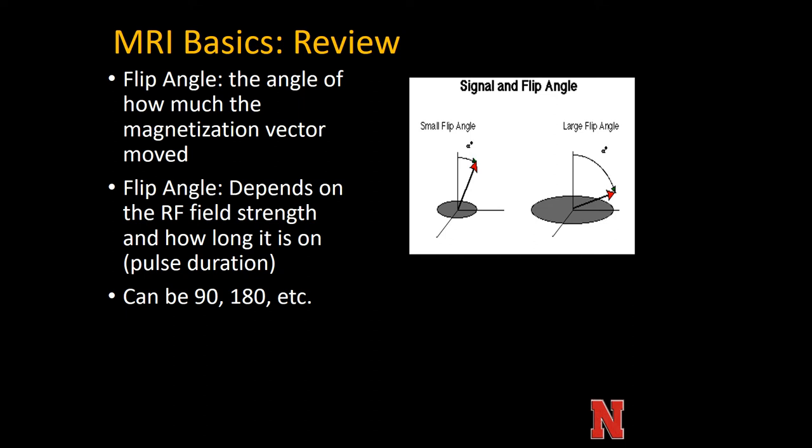So that's the basics of how MRI works — we're taking protons, lining them up, knocking them off axis, and as they change local magnetic fields, we're creating a current that can be measured. Based on the magnitude, time, and space of those current changes, a computer can put a picture together. That's the basics of how MRI works.